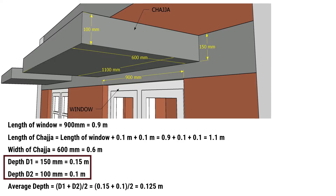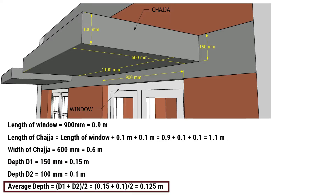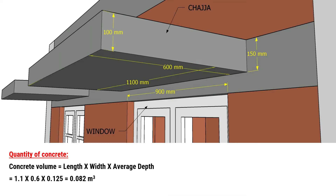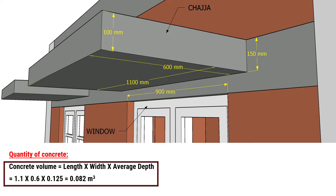To determine the quantity of concrete required, we will calculate the volume. The average depth of the chhaja is (0.15 + 0.1) / 2, which equals 0.125 meters. Therefore, the concrete volume is calculated as length × width × average depth, giving us a total of 0.082 cubic meters.